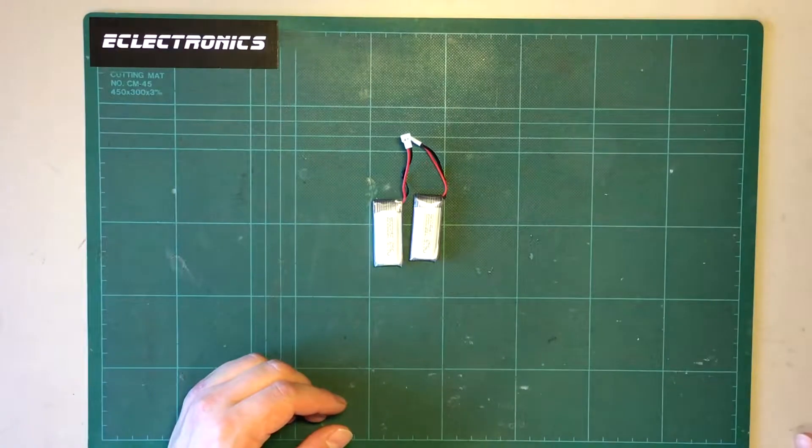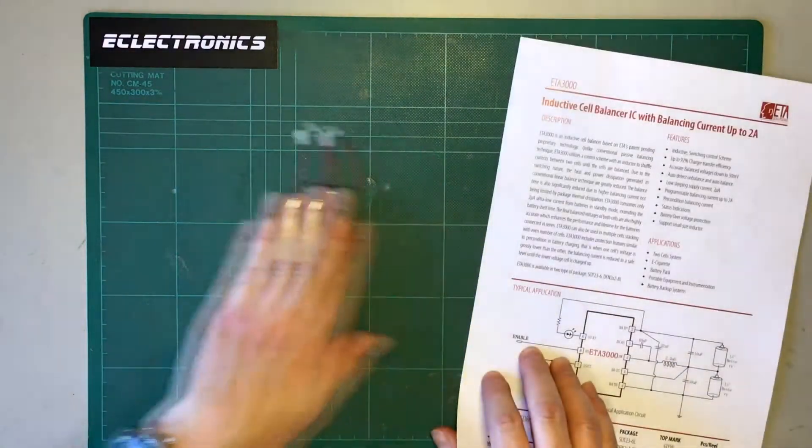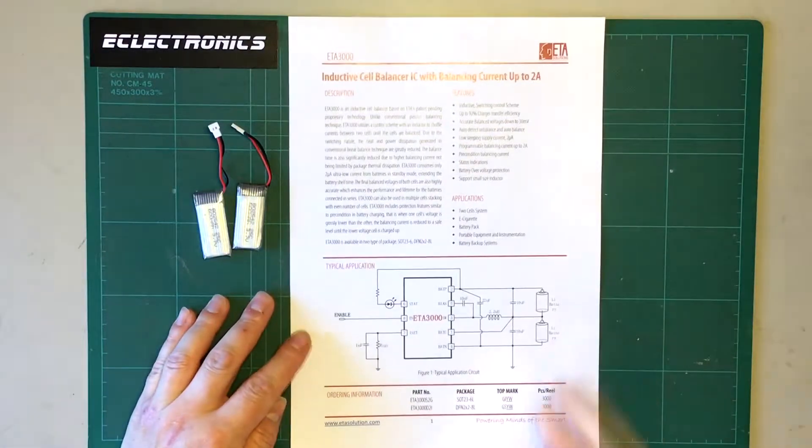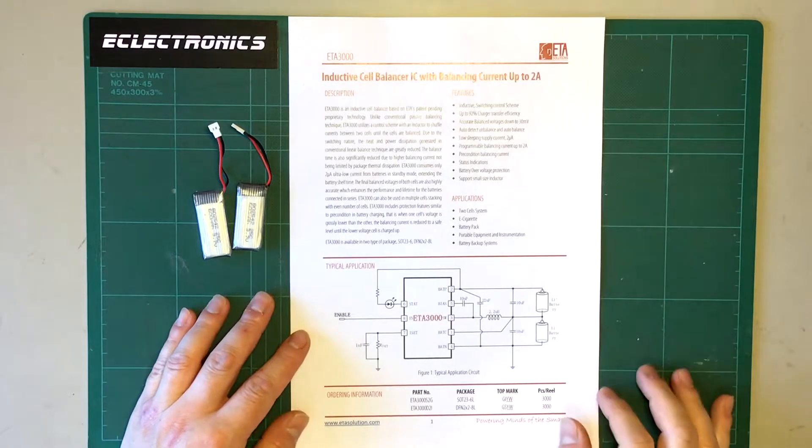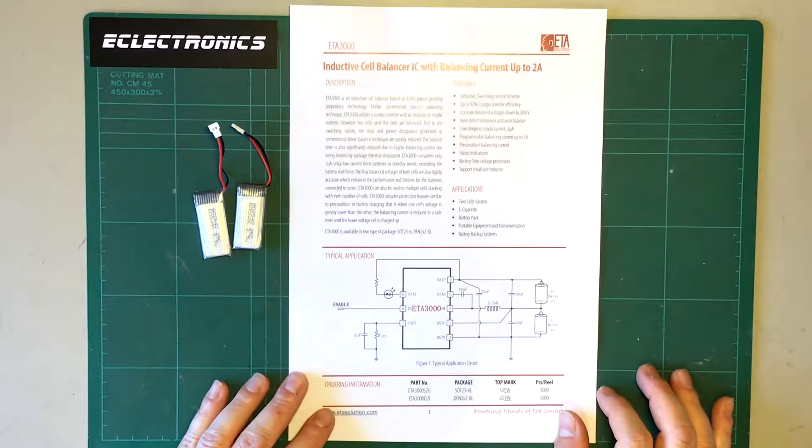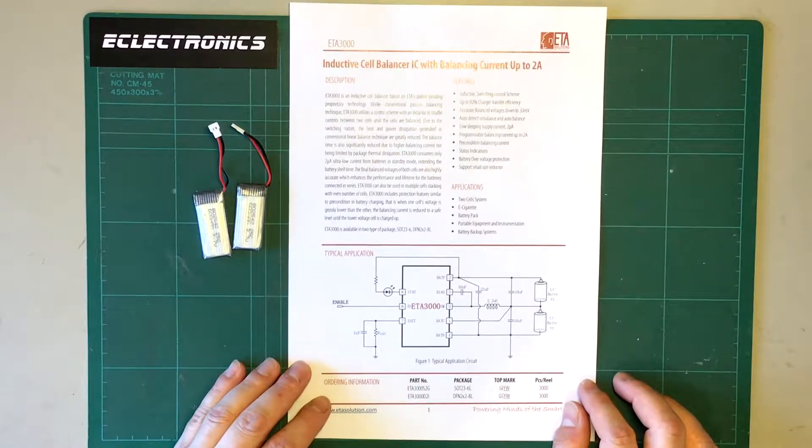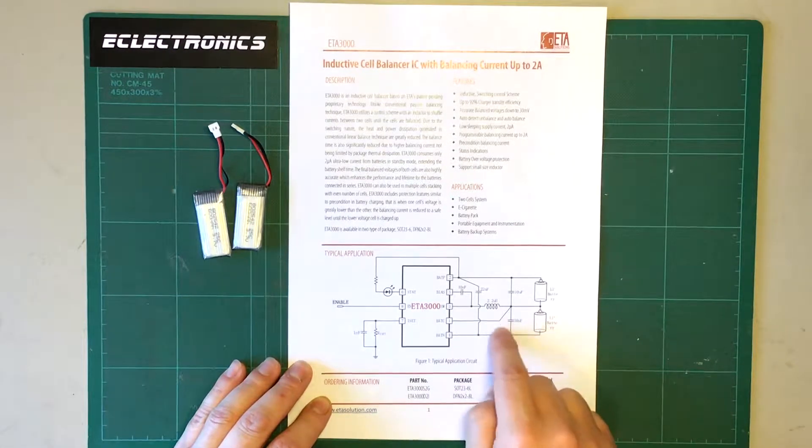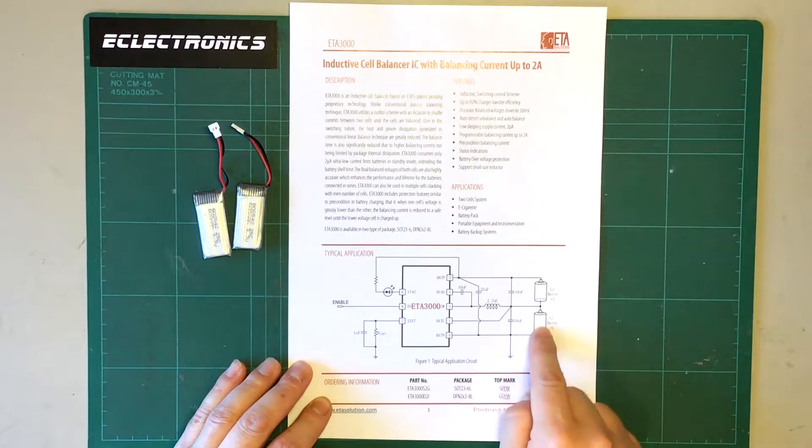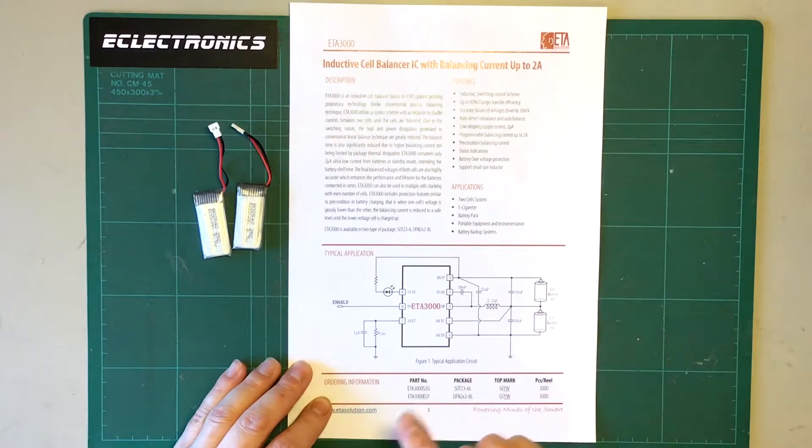But, new on the scene, recently, devices like this. Inductive charge balancers. So, this is all clever stuff. And the question is, just how is this working? How can we transfer energy from one cell to the other, in either direction, without losing any energy in a resistor?